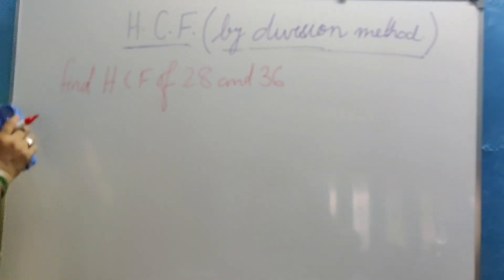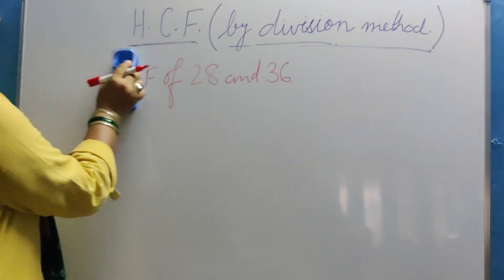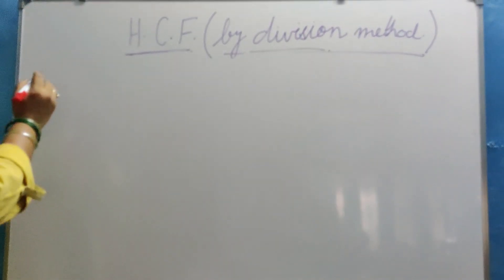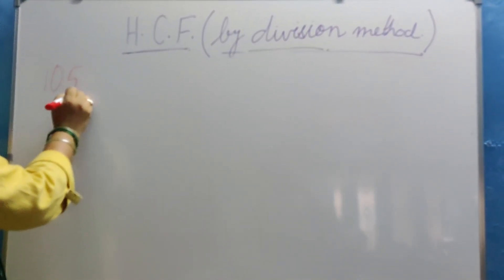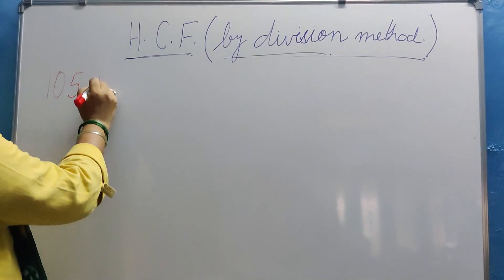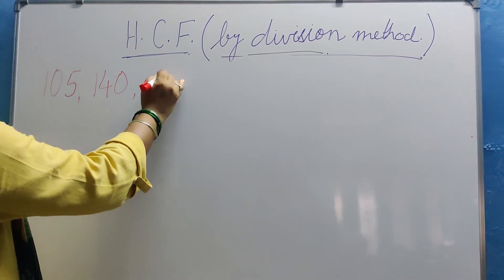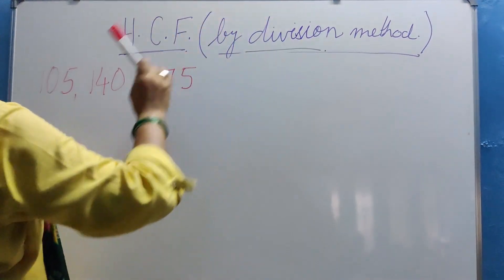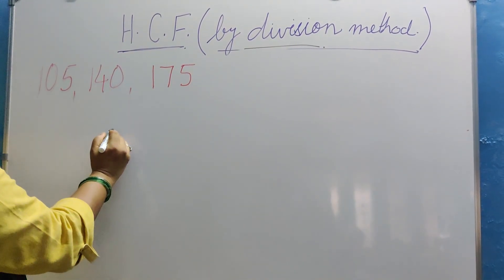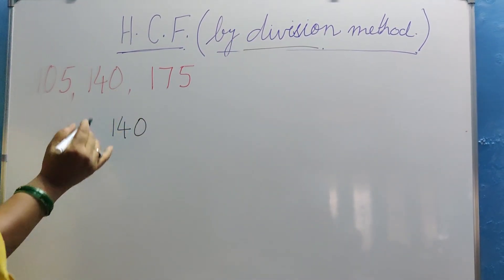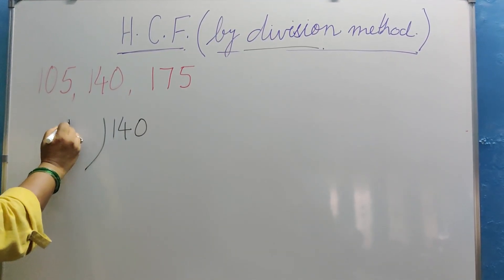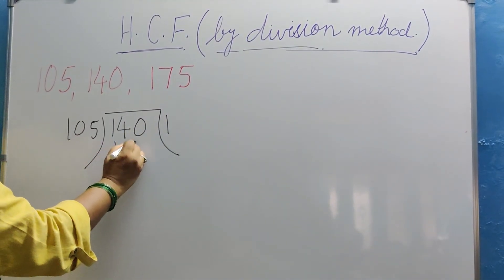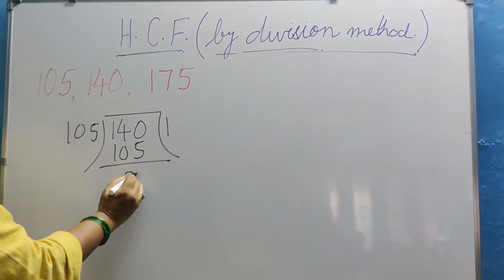Now let us take three numbers and try to find out HCF by division method. Let us take an example. The next example is 105, the second number is 140, and the third number is 175. Now as the name suggests, division method, we have to go with the division. Division of 140. We can choose any two numbers. I am choosing the first two, divided by 105. How many times is it going? One time. 1, 0, 5. What is coming? 35.